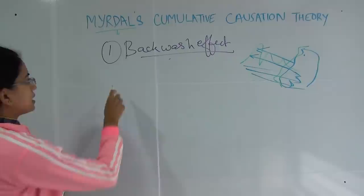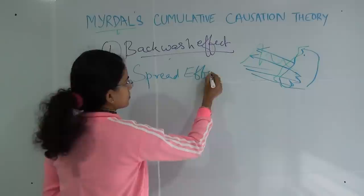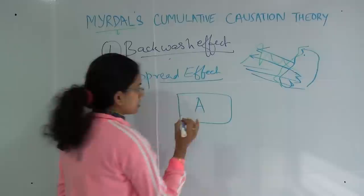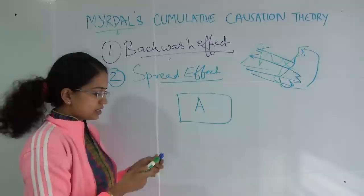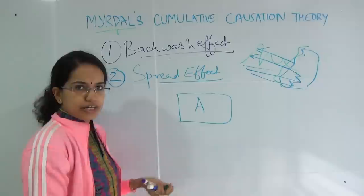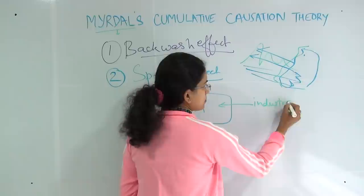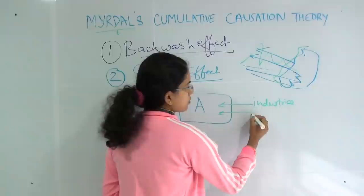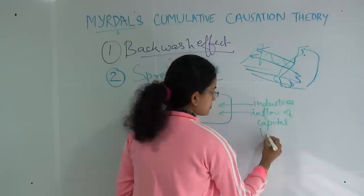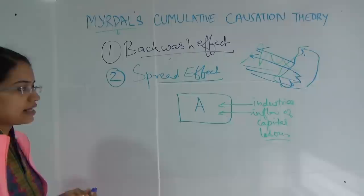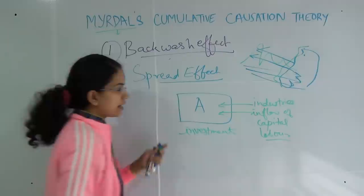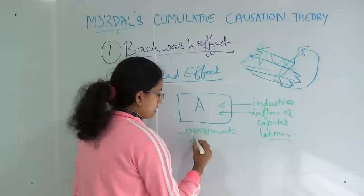The next effect he gave was the spread effect. Now we will move on to region A that we discussed previously. Since this region is naturally flourishing, it has a huge amount of minerals and coal, so a lot of industries can come up — it has advantages for industries to develop. Next, there will be an inflow of labour and inflow of capital. As a result of this huge inflow of capital and labour, there will be huge investments in this region. Because there are adequate investments in this region, development would get strengthened.